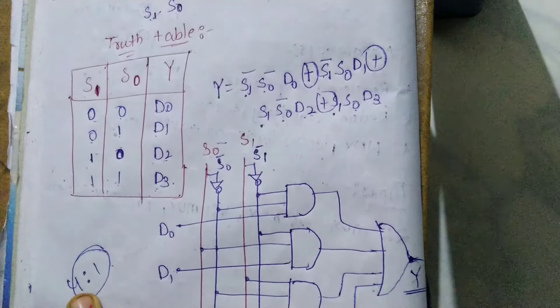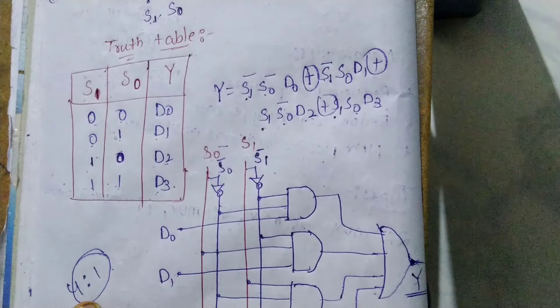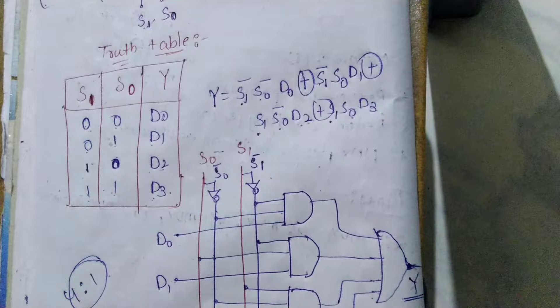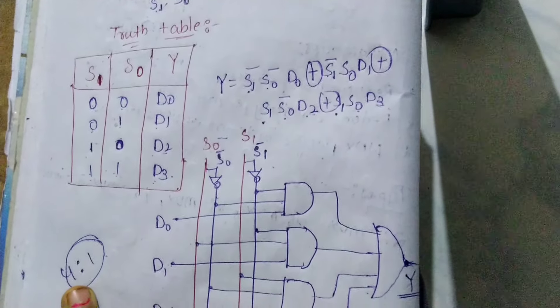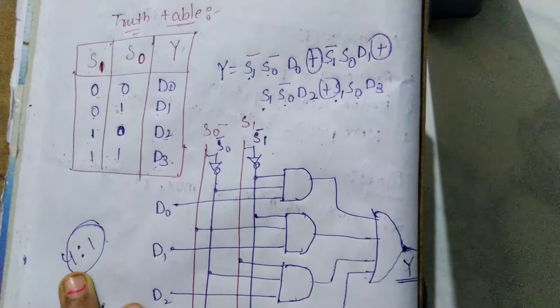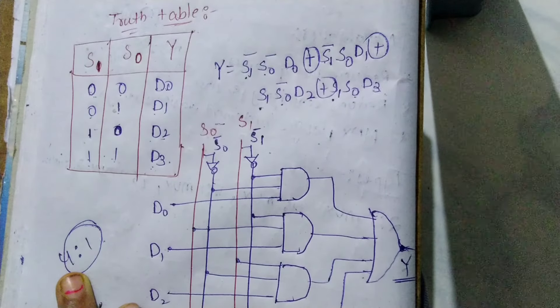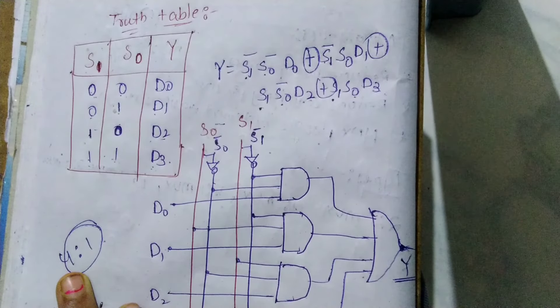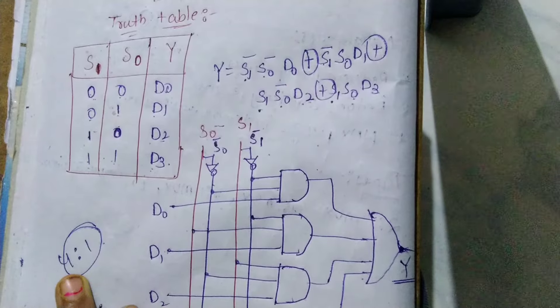And it gets D3. So this is the 4 to 1 multiplexer implementation with truth table and logic diagram. If you like this video, share and subscribe to our channel and click the bell icon for more updates. Thank you.